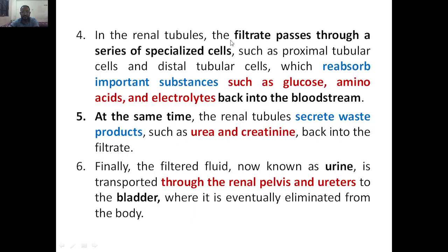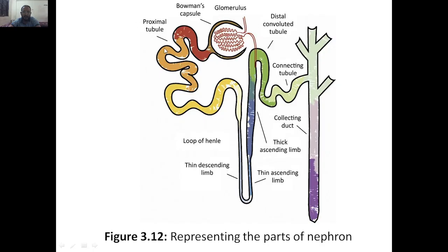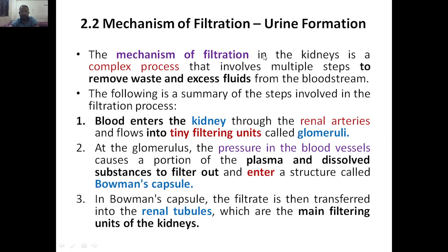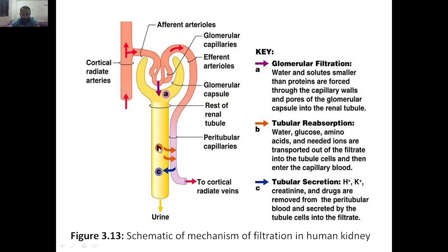In the renal tubules, the filtrate passes through a series of specialized cells such as proximal tubular cells and distal tubular cells, which reabsorb important substances such as glucose, amino acids, and electrolytes back into the bloodstream. From the proximal tubule, glucose, amino acids, electrolytes, and hormones required for the blood are reabsorbed and re-enter the bloodstream. Whatever useful things remain are given back to the blood.